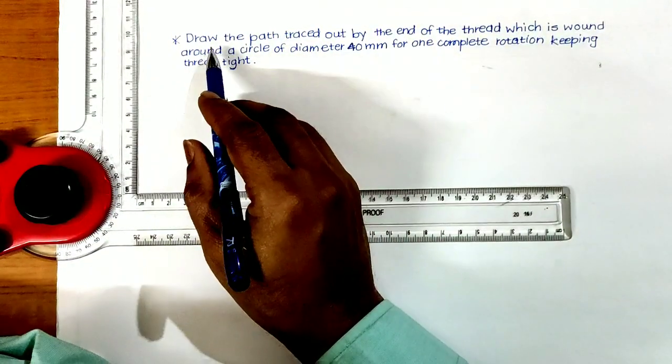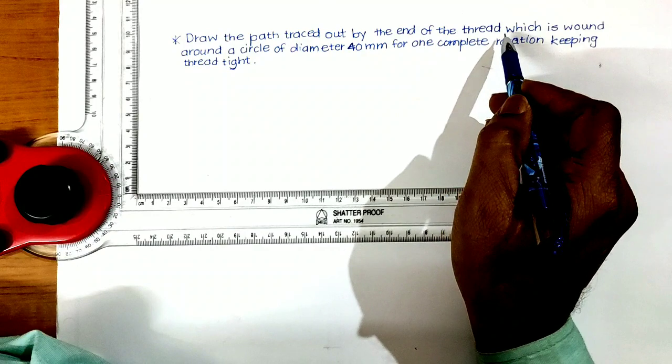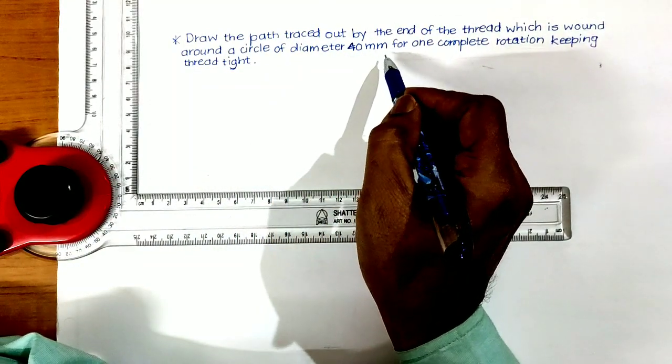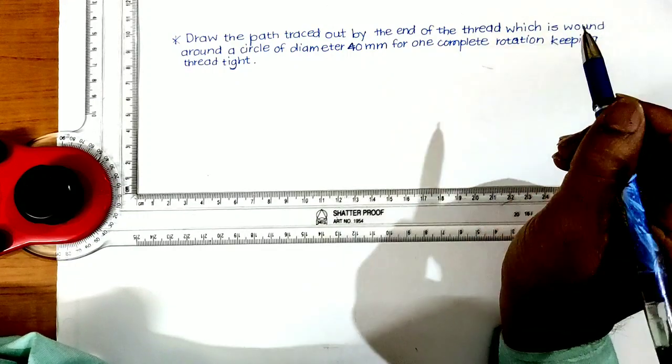This is our problem. Draw the path traced out by the end of the thread which is wound around a circle of diameter 40 mm for one complete rotation keeping thread tight.